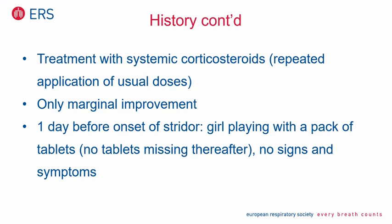So what did we do? We treated it like croup — systemic corticosteroids with usual doses; I emphasize that the doses were good, not too low. We did that repeatedly, but there was only marginal improvement — virtually no improvement at all. With no improvement due to treatment, not even a temporary improvement, it's again atypical croup. The child was not too young, but there was no improvement with treatment — so it's atypical.